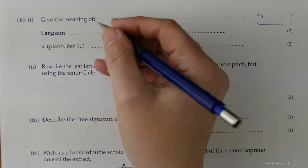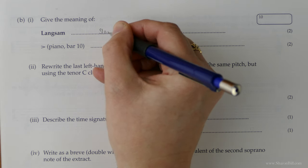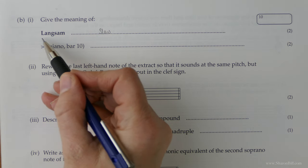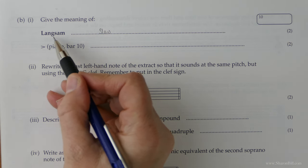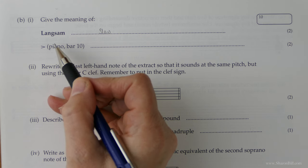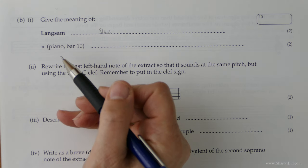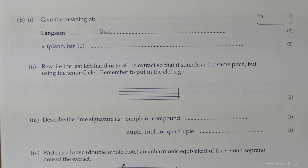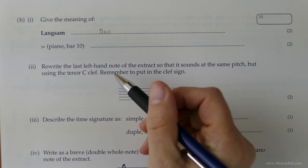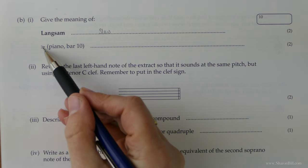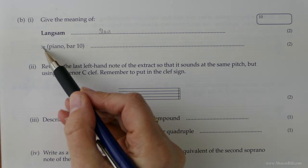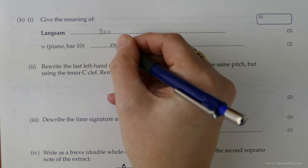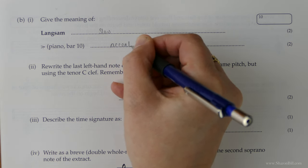So langsam is slow. So you would group that with words from your grade one, which are adagio, lento. In later grades, we come up with grave. Whatever makes sense to you. You could even colour code it just to help you to remember those. Okay, so this one we first came across in grade one. That's an accent mark. There we go.